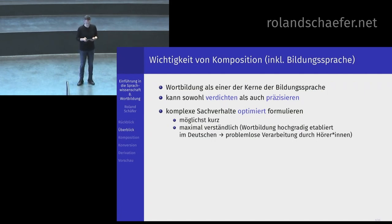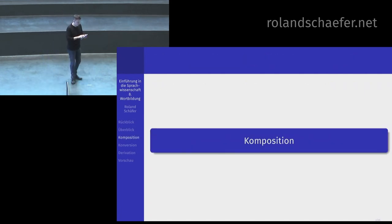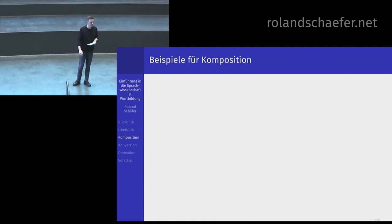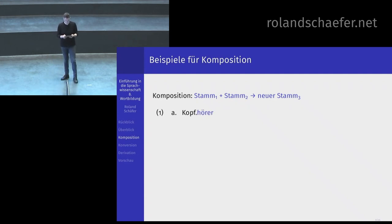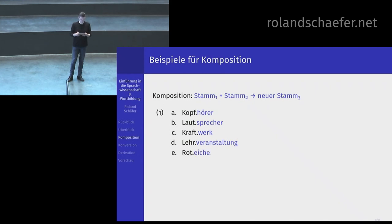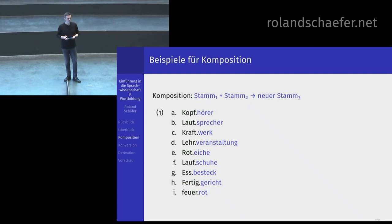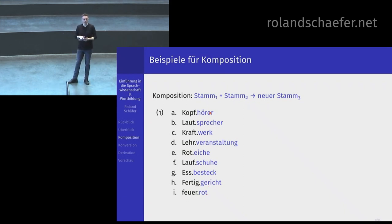Wir gehen jetzt die drei wichtigen Sorten Wortbildung durch. Die erste ist Komposition. Das ist das Muster: Stamm 1 und Stamm 2 werden zu einem neuen Stamm 3 zusammengesetzt. Beispiele: Kopfhörer, Lautsprecher, Kraftwerk, Lehrveranstaltung, Roteiche, Laufschuhe, Essbesteck, Fertiggericht, Feuerrot. Wir werden uns einigen, dass hier jeweils ein Stamm in Schwarz und ein Stamm in Blau steht. Die werden zusammengesetzt und verhalten sich dann wie ein neuer Stamm mit einer bestimmten Bedeutung. Das ist Komposition.